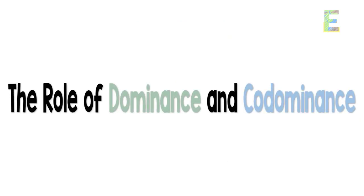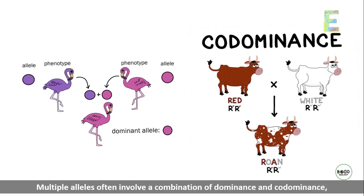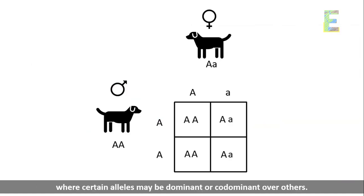The role of dominance and codominance. Multiple alleles often involve a combination of dominance and codominance, where certain alleles may be dominant or codominant over others.